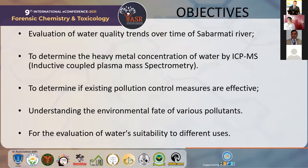The objectives of this study are: first, to evaluate water quality trends over time in the Sabarmati river — whether heavy metal concentration is decreasing or increasing month by month. Second, to determine heavy metal concentration using ICP-MS, which stands for Inductively Coupled Plasma Mass Spectrometry. Third, to determine if existing pollution control measures are truly effective.